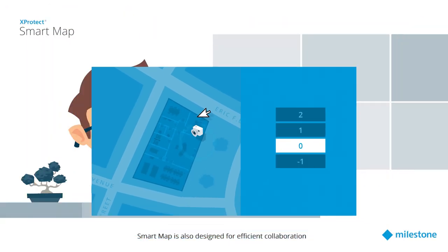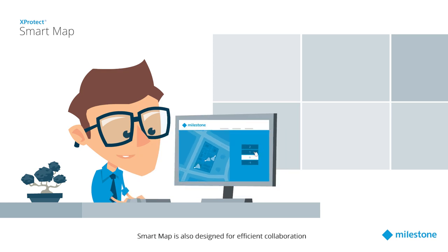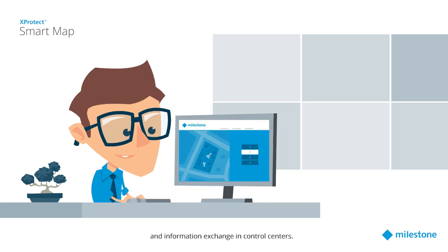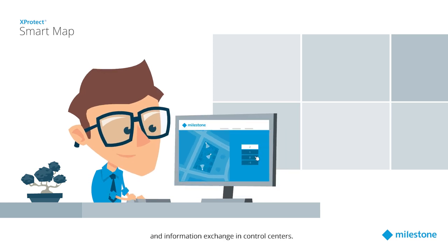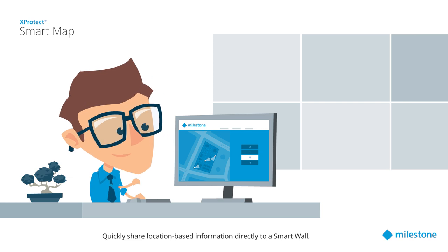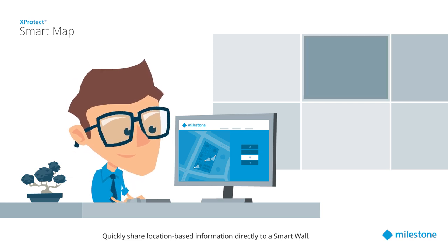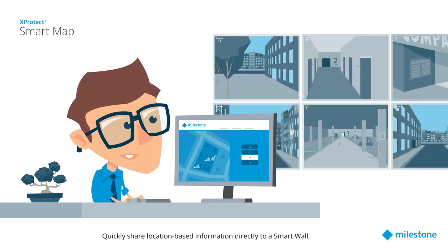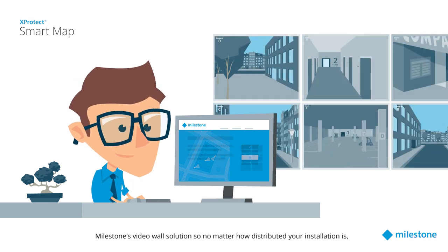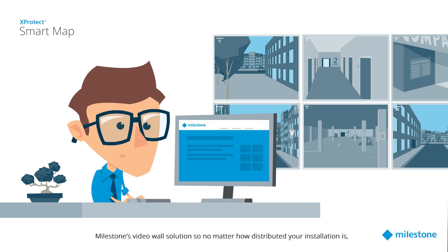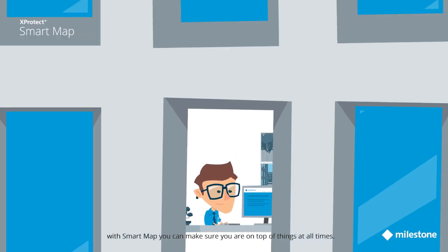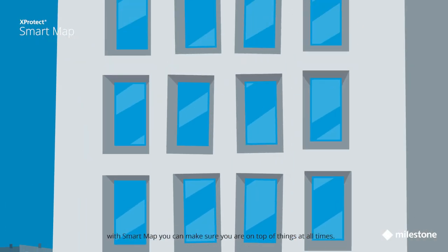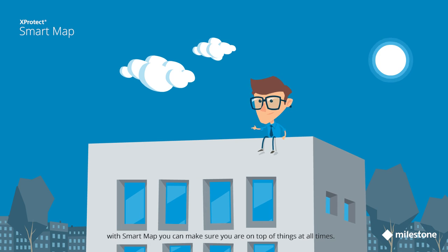Smart Map is also designed for efficient collaboration and information exchange in control centers. Quickly share location-based information directly to a smart wall — Milestone's video wall solution — so no matter how distributed your installation is, with Smart Map you can make sure you are on top of things at all times.